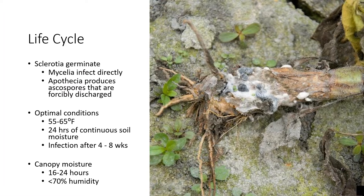Overall, the sclerotia will germinate. For Sclerotinia minor, the white fluffy mycelial body will germinate directly out of the sclerotia. But more commonly, especially with Sclerotinia sclerotiorum, apothecia will form — these are mushroom-type structures that emerge from sclerotia and forcibly discharge spores up into the canopy. Sometimes they can go extremely high; other times they stay pretty localized right near the soil surface.